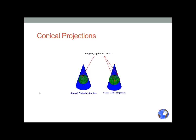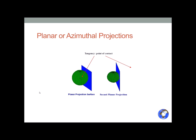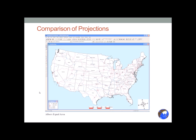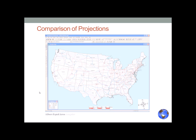Conical projections slip down over the planet. They're generally used in northern latitudes because they preserve direction very well, and they can be tangent or secant as well. Planar or azimuthal projections use a flat piece of medium up against the planet — they can be tangent, having one point of contact, or secant, having two points of contact. Since they're azimuthal, they preserve distance or direction.